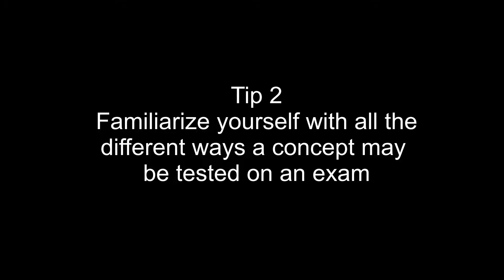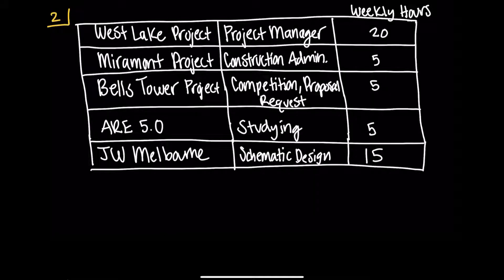The second tip is: familiarize yourself with the different ways a concept will show up on an exam. We're still going to look at utilization rate — finding the utilization rate of an employee given a table showing the projects they're working on, the roles they have on each project, and the hours on that project. Remember how we said the utilization rate formula can show up in terms of dollars as a cost, or in terms of time as hours. It's really important to understand how that concept might show up on an exam.